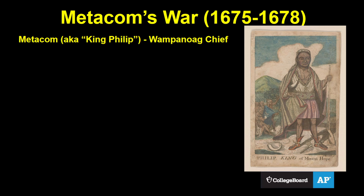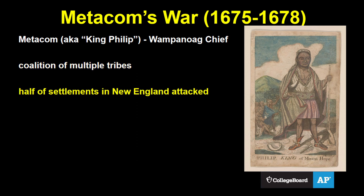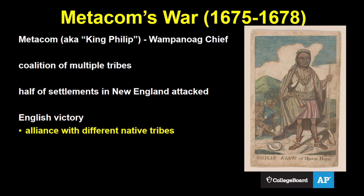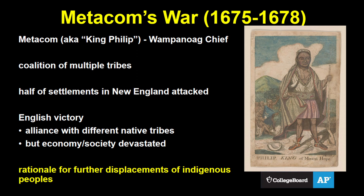Metacom was a capable military leader as well as a skilled diplomat, and he was able to form a coalition of many tribes in addition to the Wampanoag. Half of all English settlements were attacked, and thousands died on each side. The English were eventually victorious, not least because they also had support from other Native American tribes. But colonial England's economy and society took decades to recover. This was one of many rationales for the colonists to further displace the Wampanoag and their allies — part of a long-standing pattern of Western expansion at the expense of indigenous peoples.